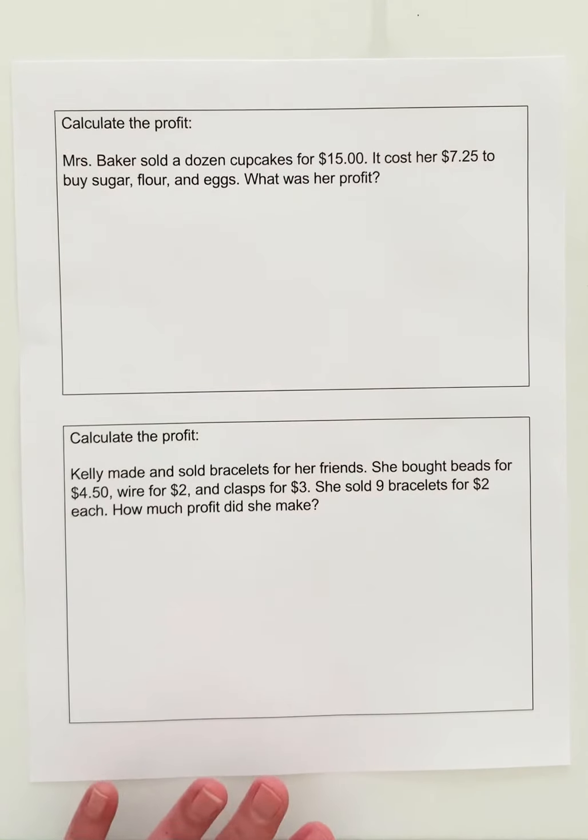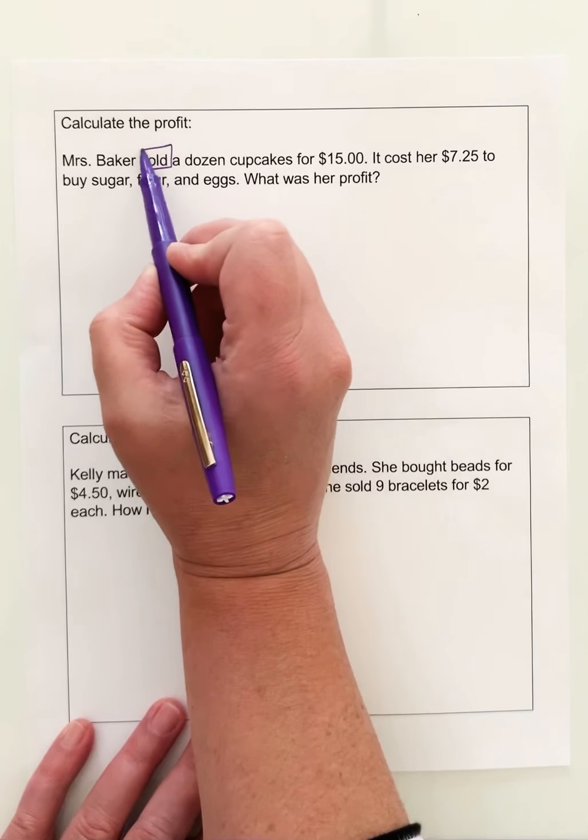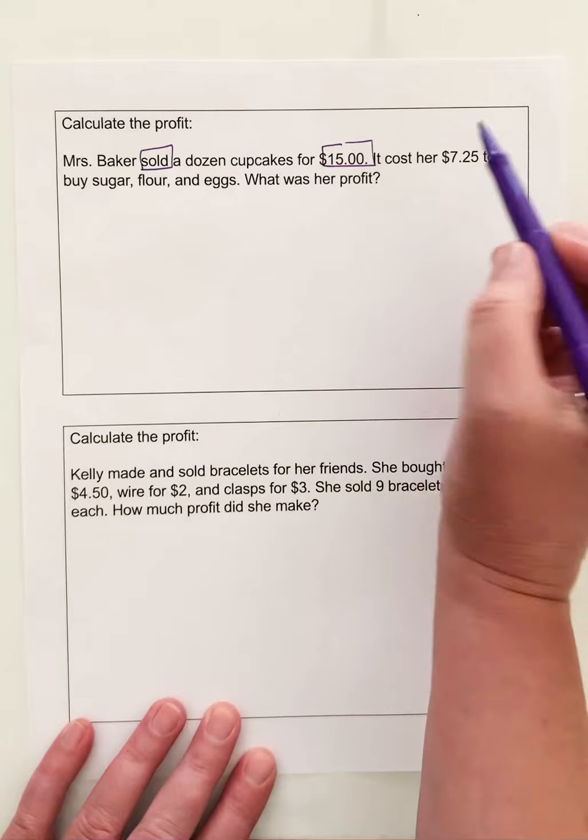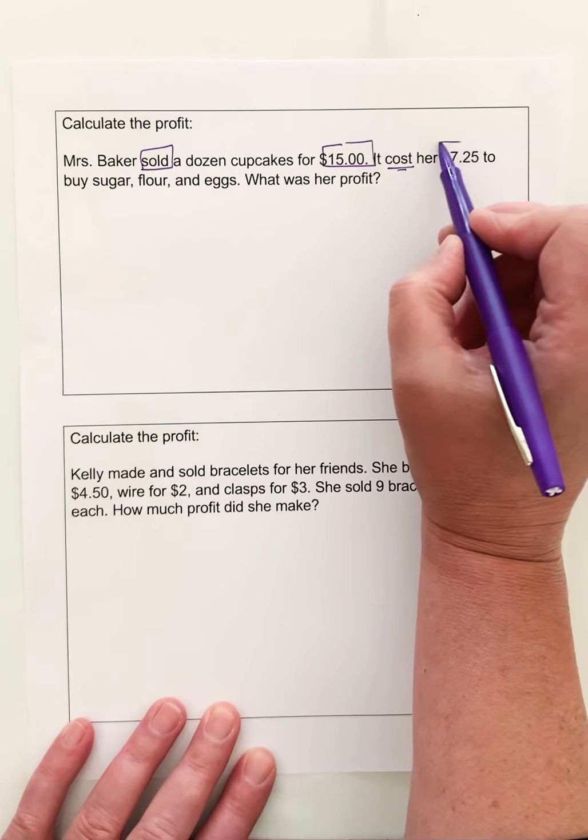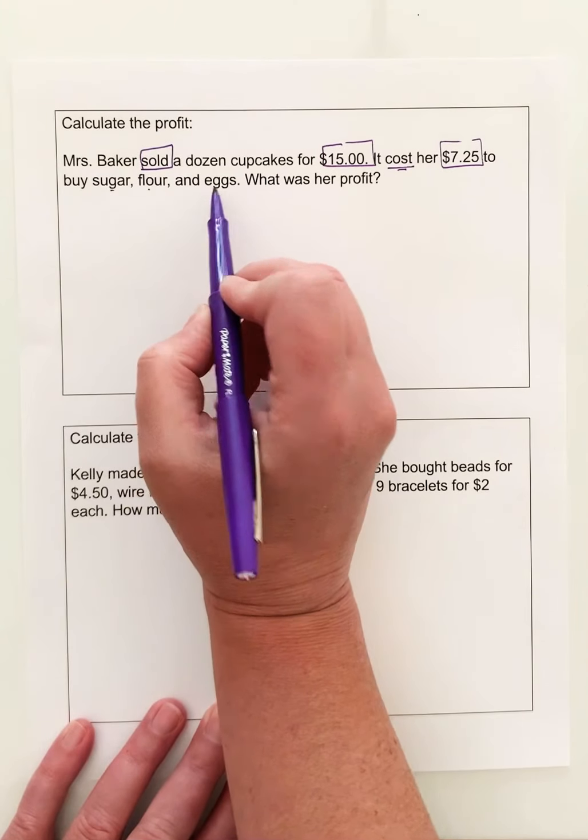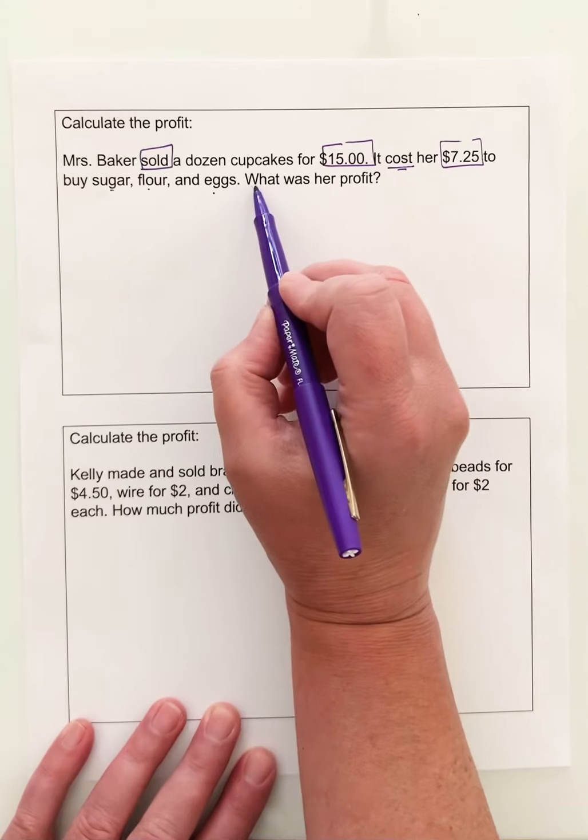Okay, let's look at our next one. Mrs. Baker sold a dozen cupcakes for $15. So she sold for $15. It cost, there's our word cost, her $7.25 to buy sugar, flour, and eggs. Hmm, those sound like supplies.